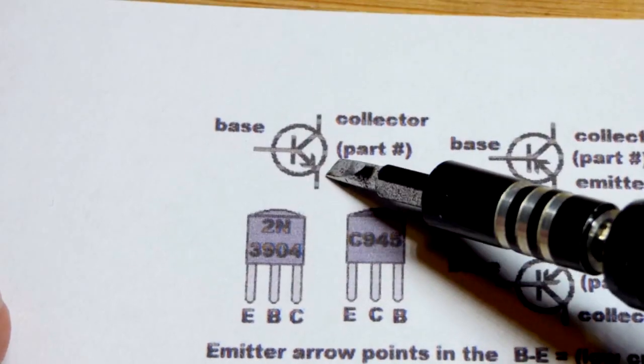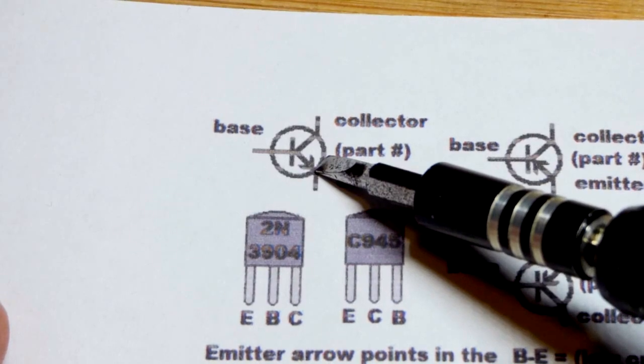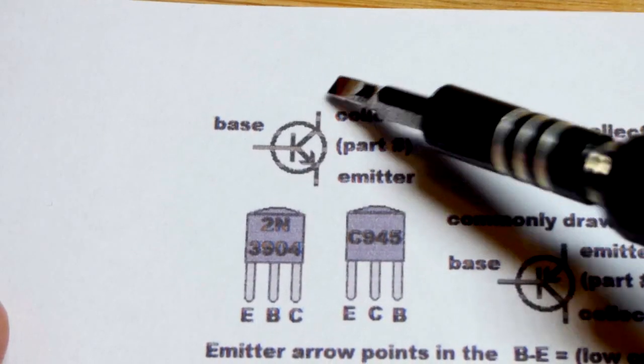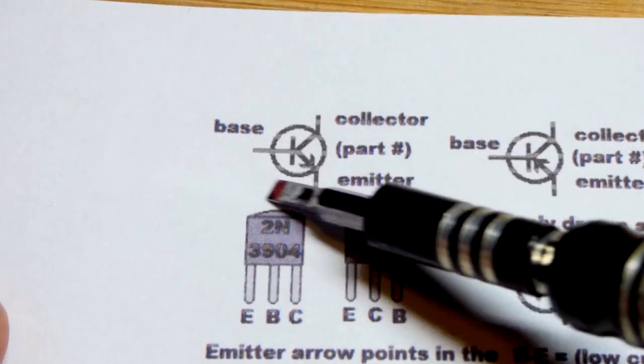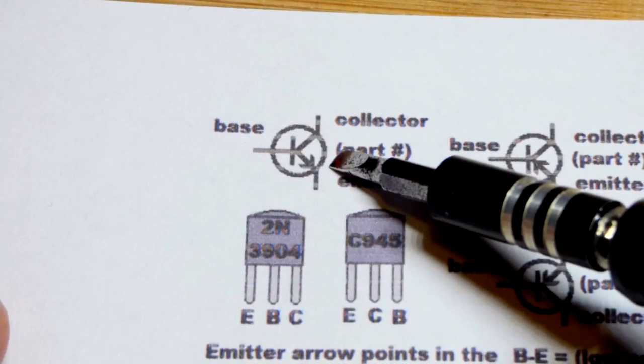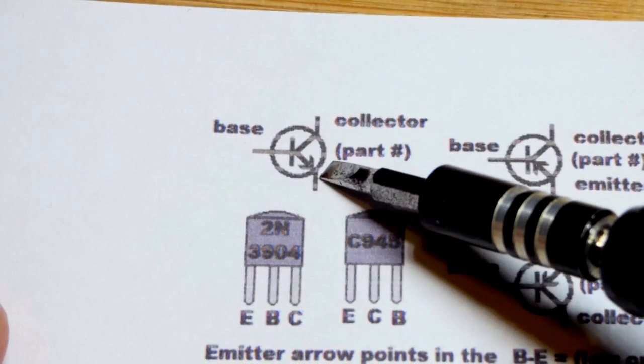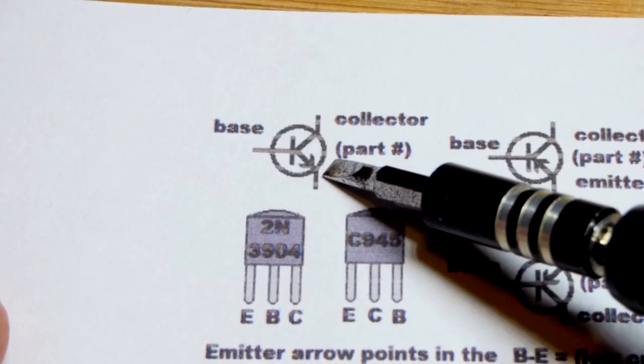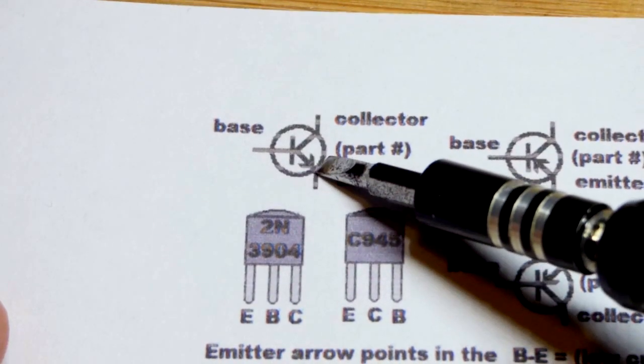So now in this video we're going to talk about the schematic symbol for the bipolar junction transistor. This is a schematic symbol for the NPN bipolar junction transistor. That's the chemical makeup. You can look at other videos about the chemical makeup, but here we're going to talk about the schematic symbol.